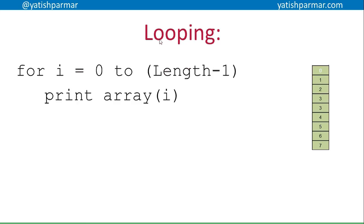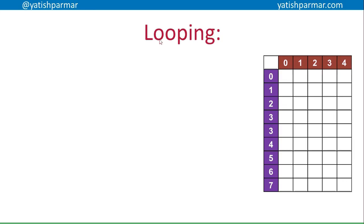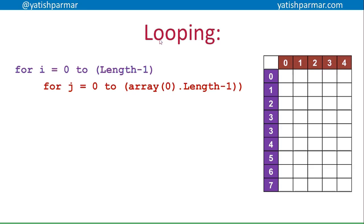A similar approach is used for a two-dimensional array. I've got rows going down and columns going across, so I can have an outer loop `for i = 0 to length - 1` and then an inner loop `for j = 0 to array[0].length - 1`. The inner loop goes through indices 0, 1, 2, 3, 4 across the columns while the outer loop increments the row. So I'll print `array[0][0], [0][1], [0][2], [0][3], [0][4]`, then increment the outer loop to row 1, and so on — looping through the entire 2D array.